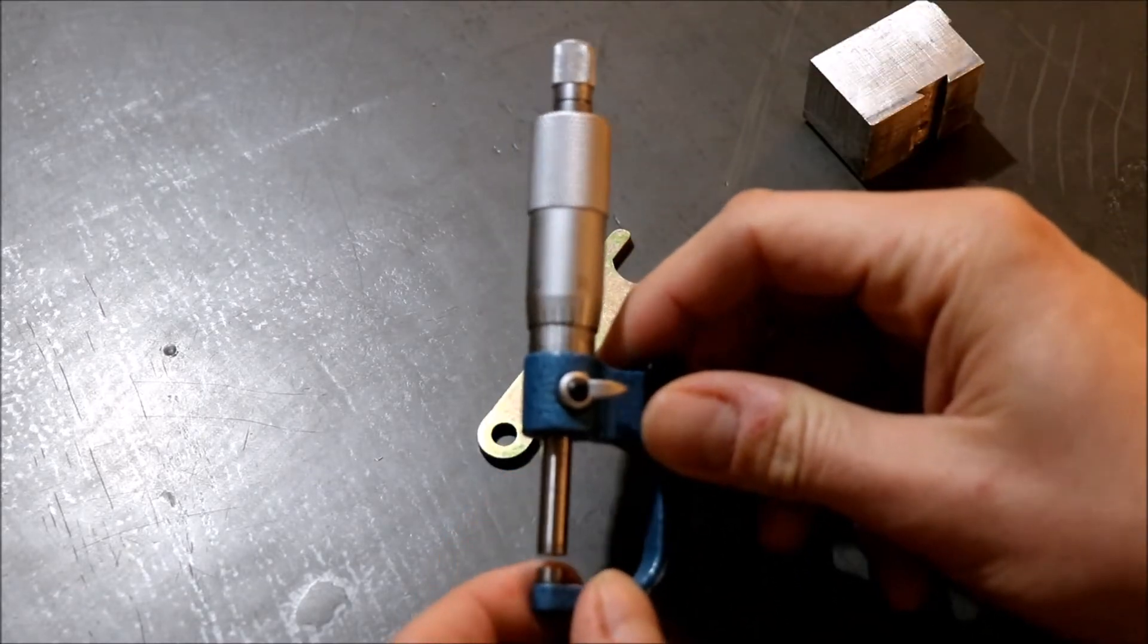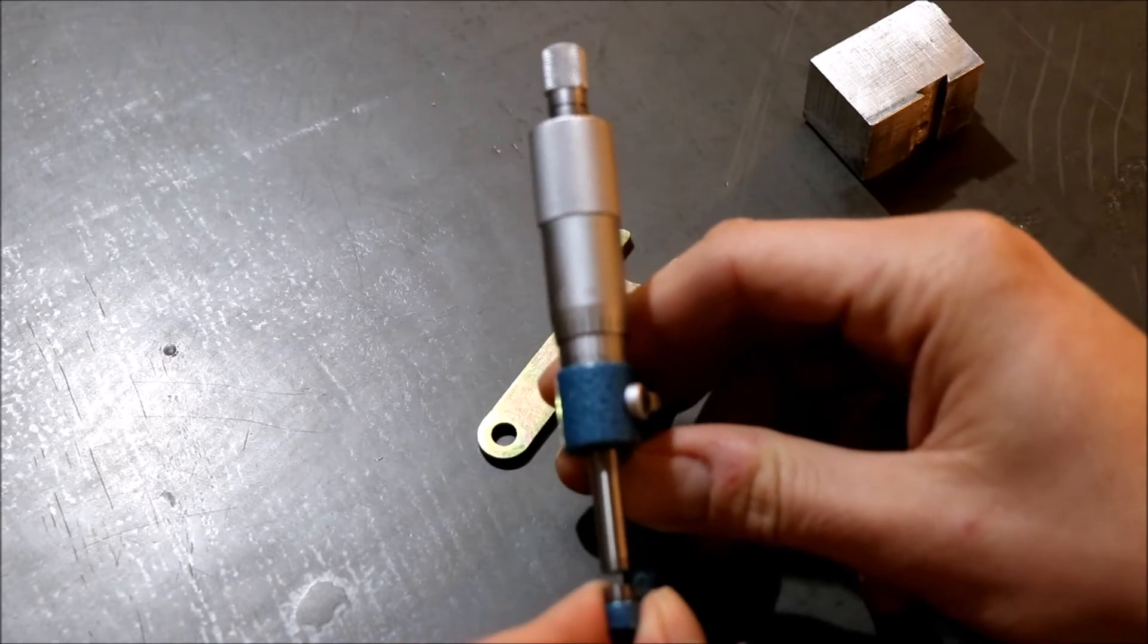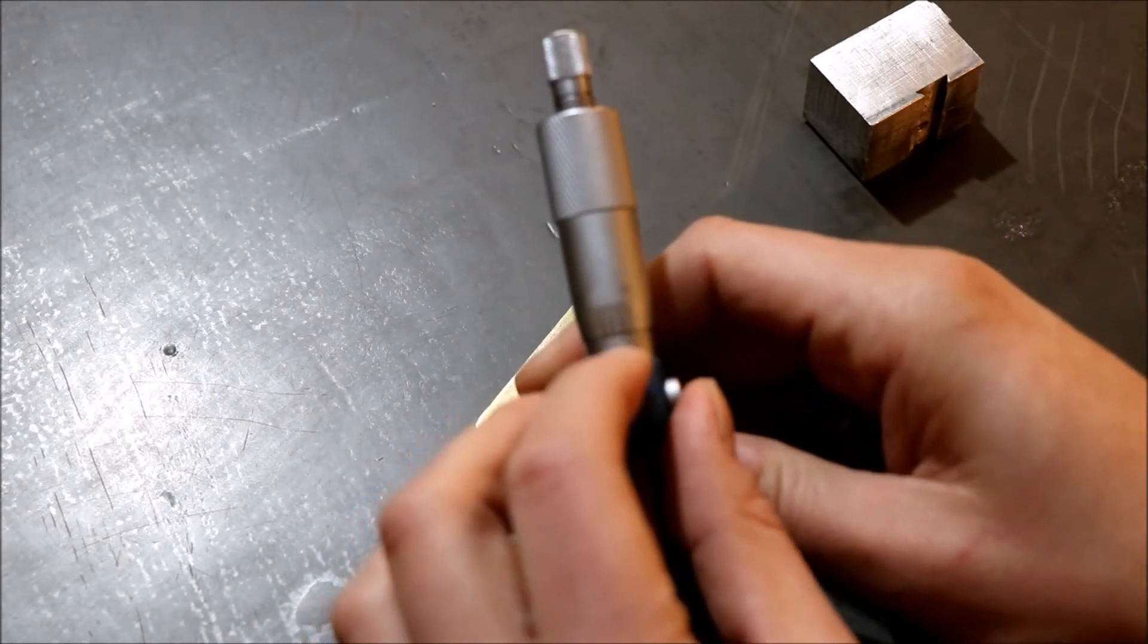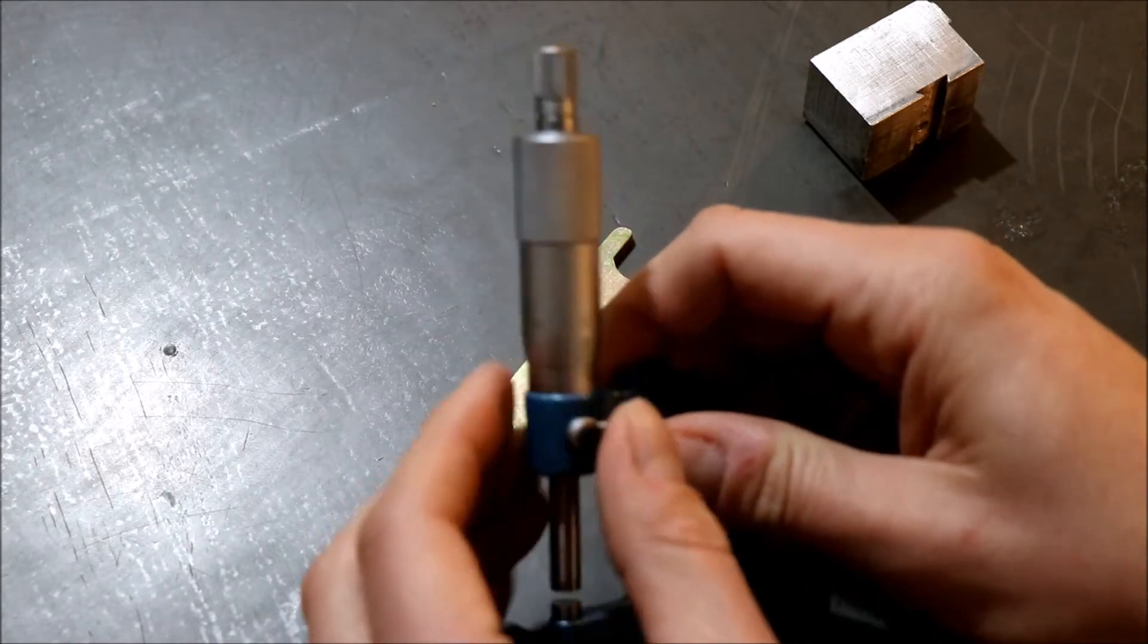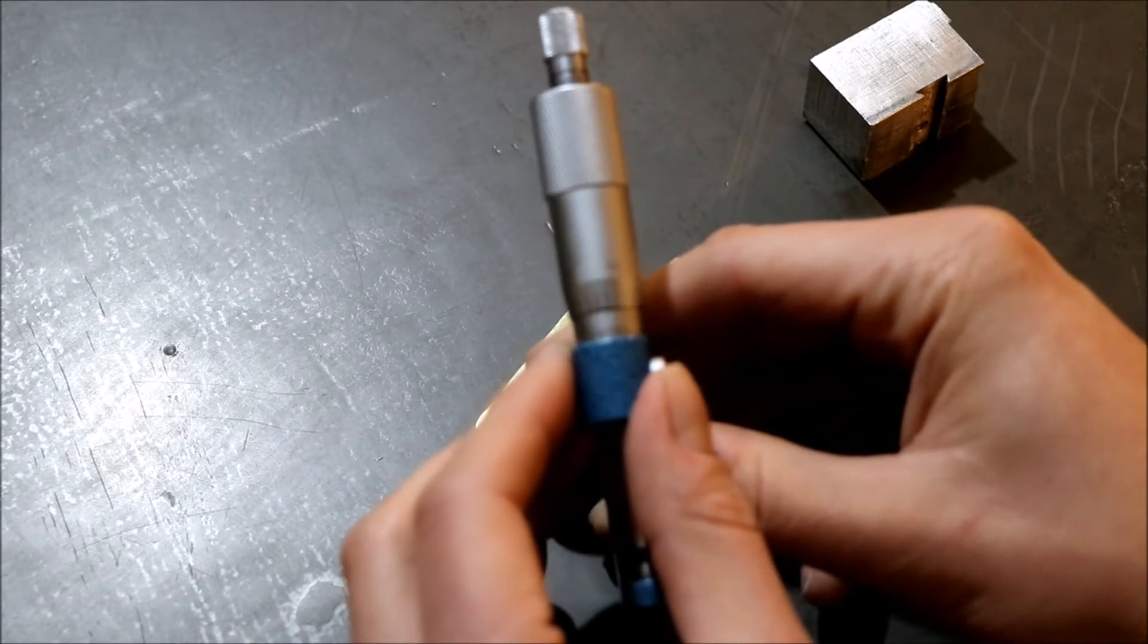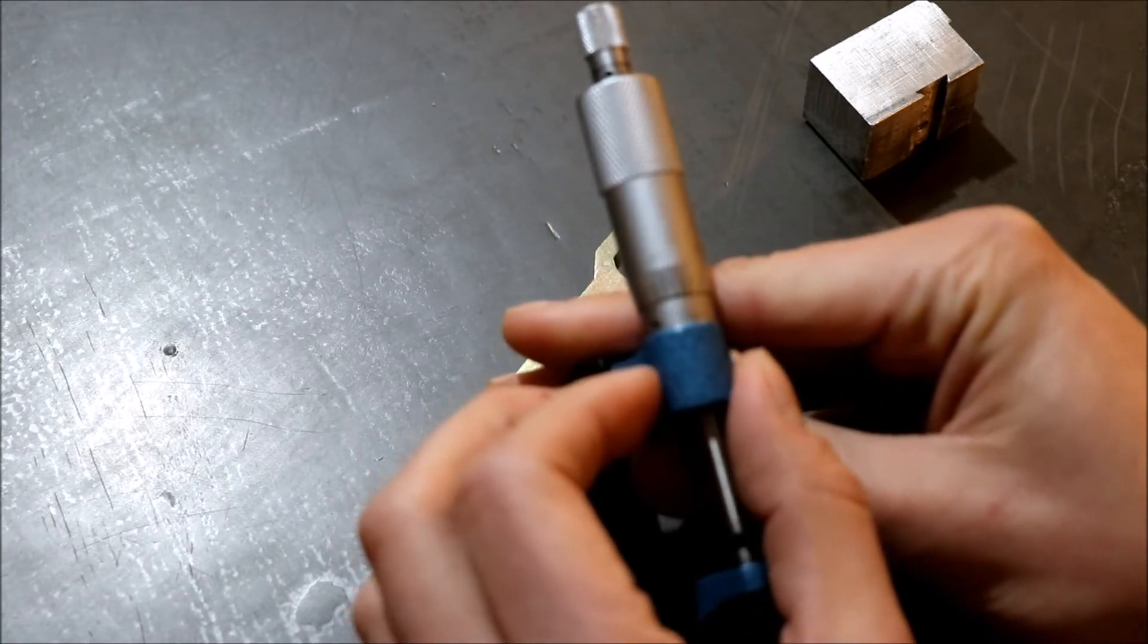And this one being a micrometer that can measure out to four decimal places we have a vernier scale here. And the way you work a vernier scale is you're looking for which lines line up with each other out of these 10 lines here.